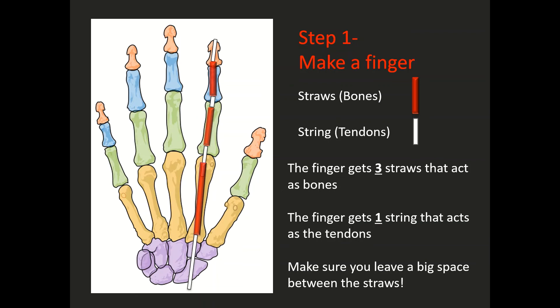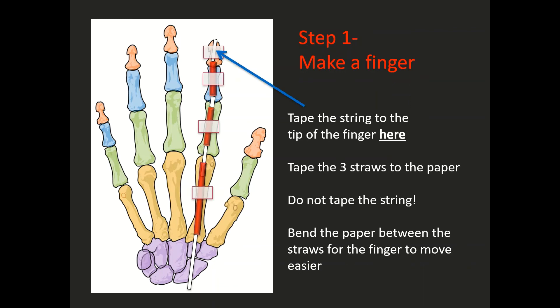Now, very importantly, when you tape down those pieces of straw to the hand, you have to leave enough spaces in between the straws. This will become important later on when you're doing your surgery to fix your tendons. The next step is you're going to tape the end of the string to the tip of the finger.